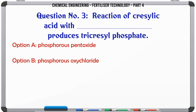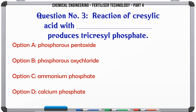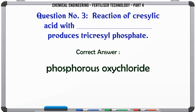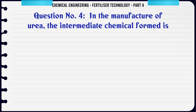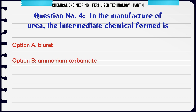Reaction of chrysalic acid which produces tricresyl phosphate: a. phosphorus pentoxide, b. phosphorus oxychloride, c. ammonium phosphate, d. calcium phosphate. The correct answer is: phosphorus oxychloride.